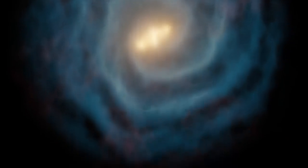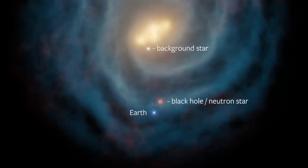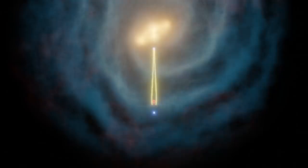Microlensing happens when a black hole passes in front of a distant star. The black hole's strong gravitational pull acts like a magnifying glass, focusing the star's light coming our way.